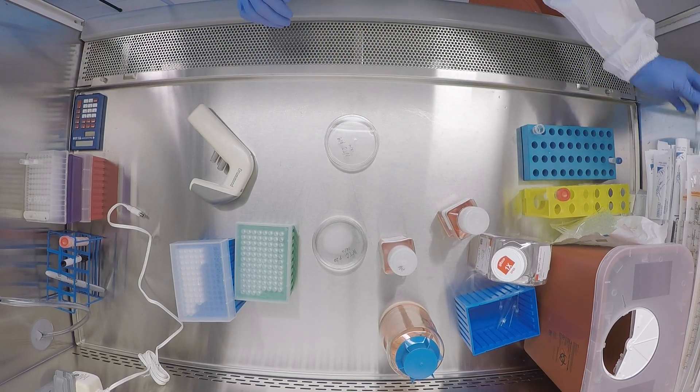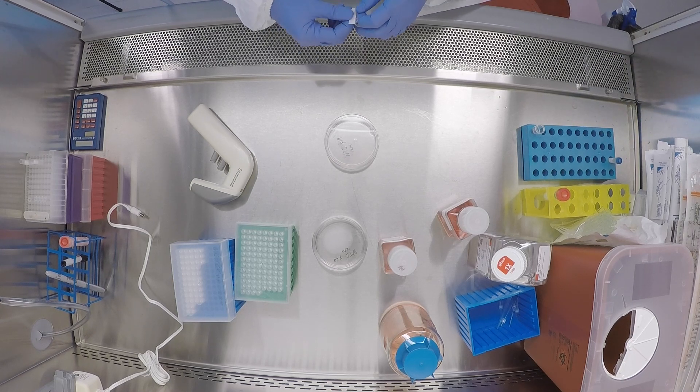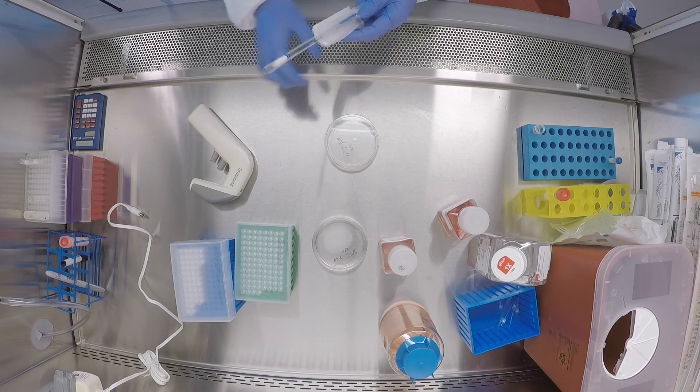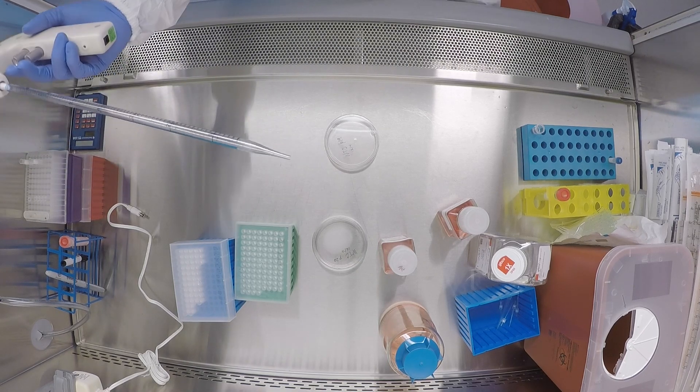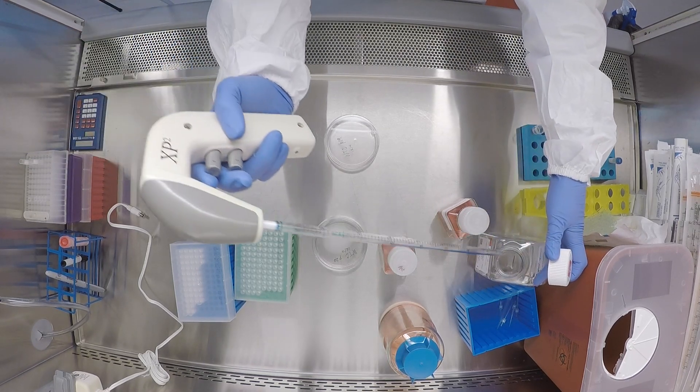So what I want to do is break them up into single cell suspension. These cells can be passaged as clumps, but we often passage them as single cells for other processes, such as transfecting them or FACS sorting them, where we really want them to be as single cells.